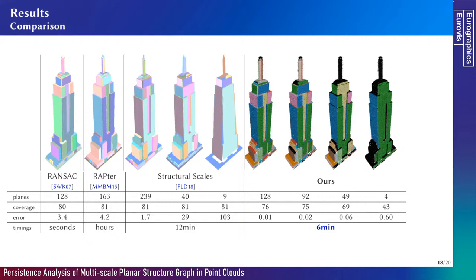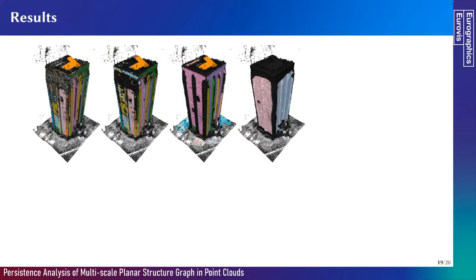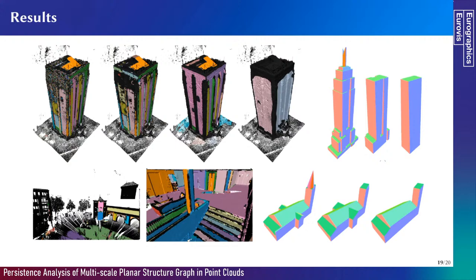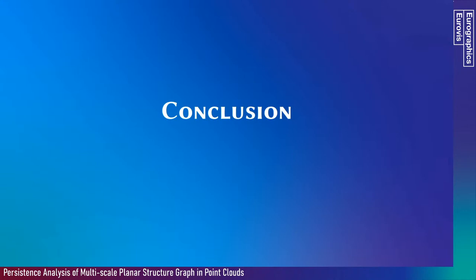In terms of processing time, our method takes around six minutes to process one million points, while structural scale and RAPTOR are slower. Note that 90% of the time is spent in the APSS reconstruction; segmentations and component extractions on the graph take less than a minute. In our paper, we provide more results on even more complex point clouds, like a tower containing more than 30 million points. We can handle various kinds of data in indoor or large-scale outdoor scenes, with point clouds from different acquisition sources like LiDAR or multiview stereo. We also show that our results can be used to improve polygonal surface reconstruction.